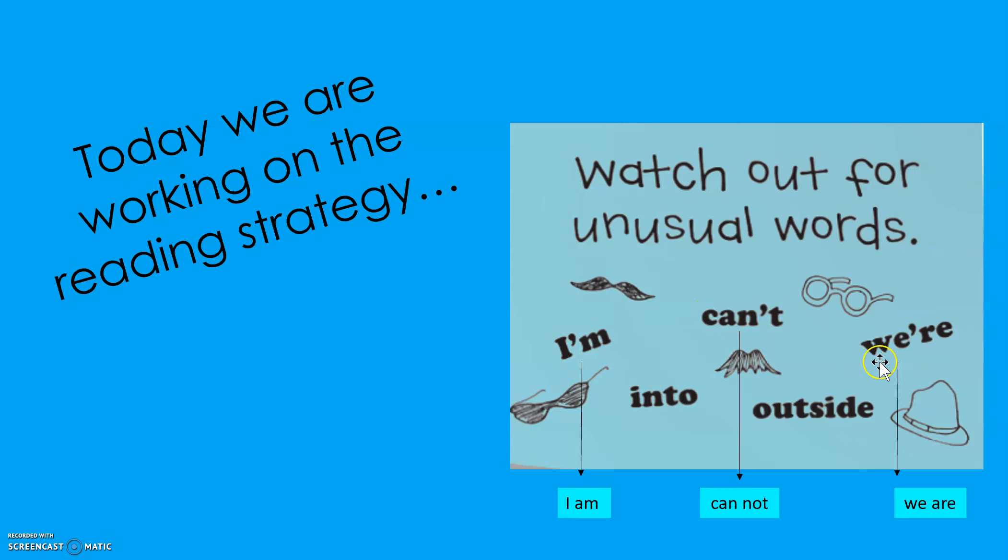These are called contractions. So it's two words that have been squished together, and when that happens, sometimes letters pop out. So for example, I'm, if you see this apostrophe m, you know that it's I am.